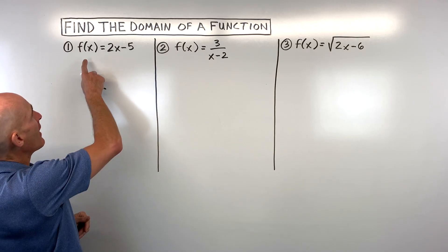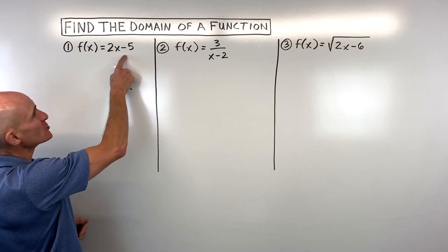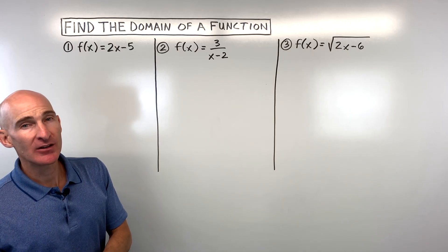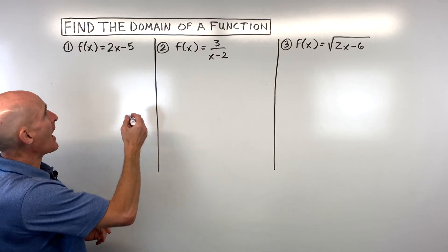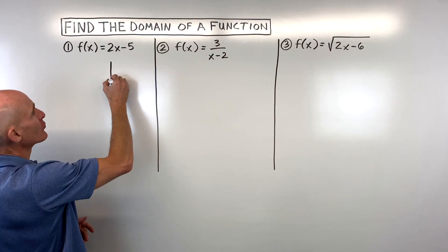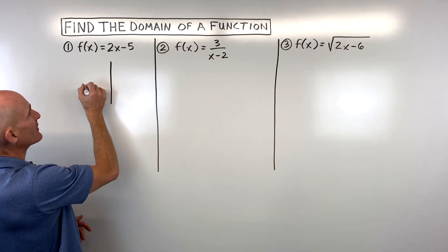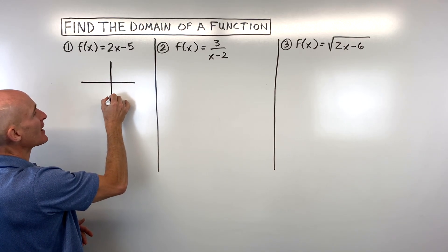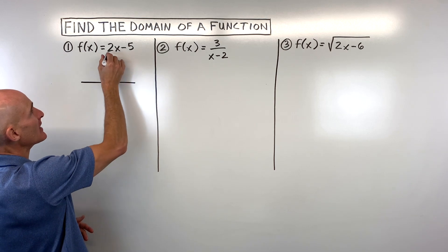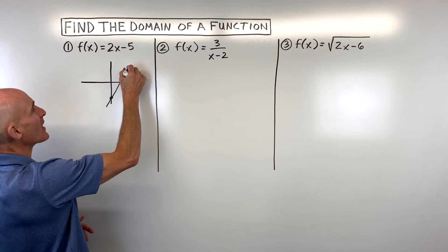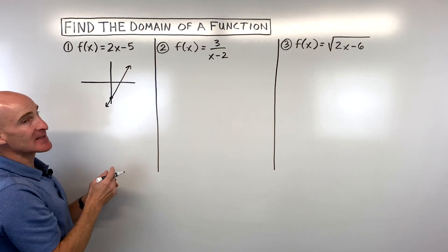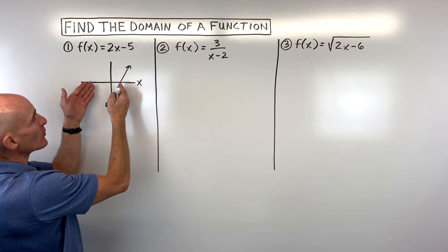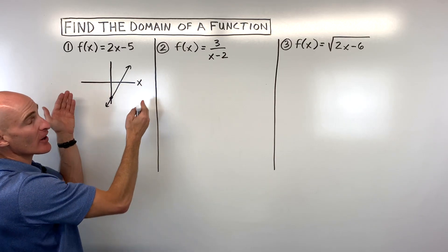The first example: f of x equals 2x minus 5. What's the domain? You might already know what that graph looks like. If I was to graph this, I know it has a y-intercept of negative 5 somewhere down here, it has a slope of 2 — rise 2, run 1. And when I'm talking about the domain, the domain is what can the x values be.